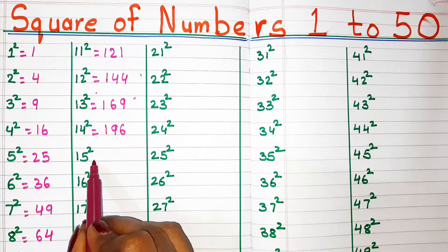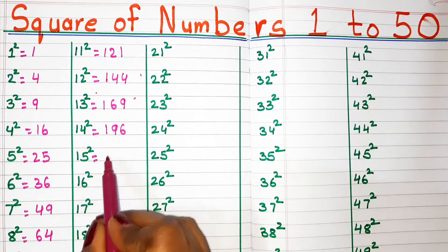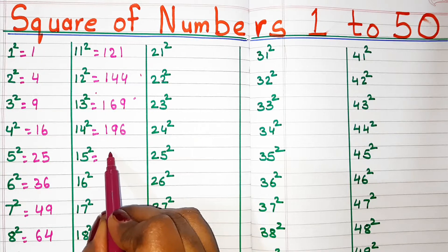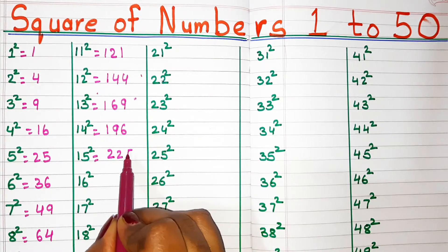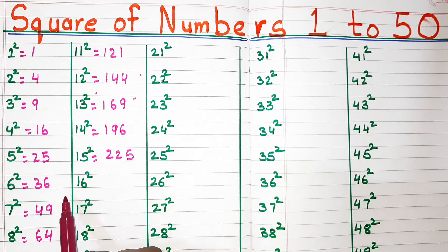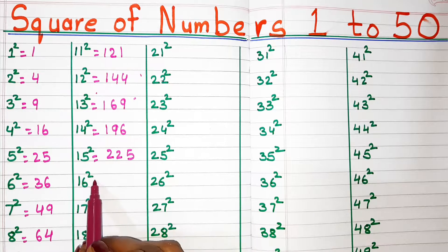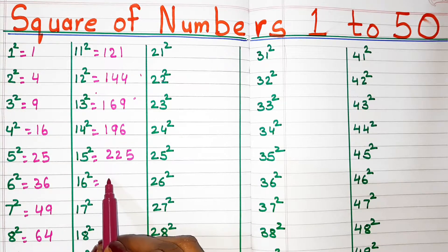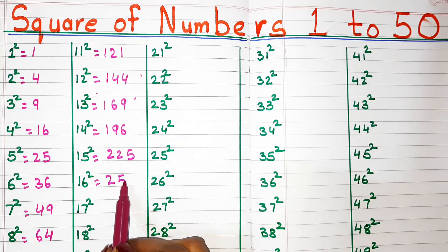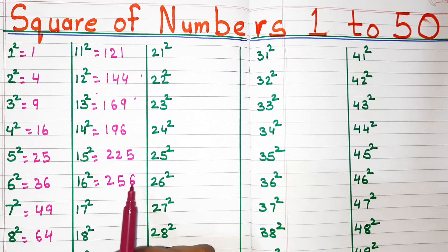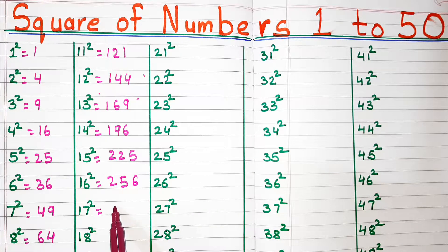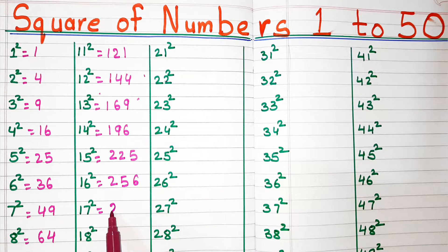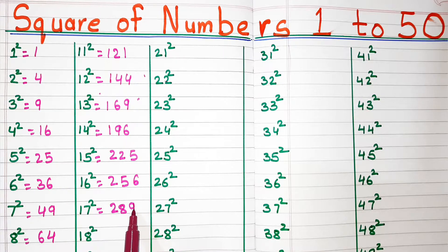Square of 15, 225. Square of 16, 256. Square of 17, 289.